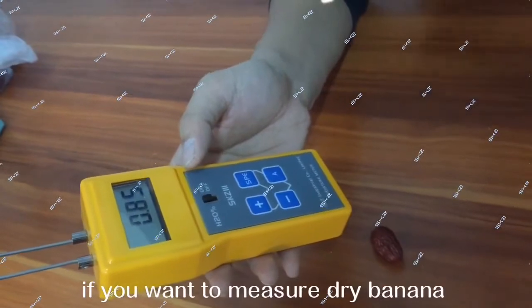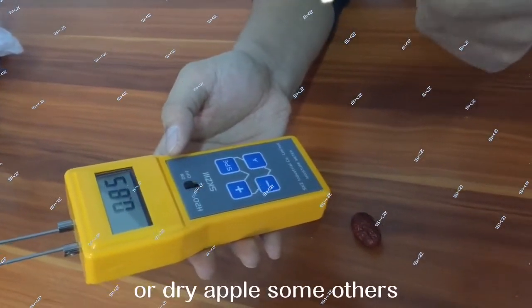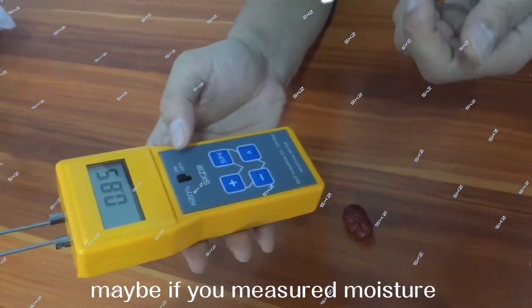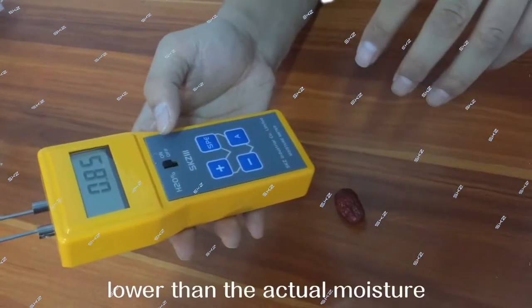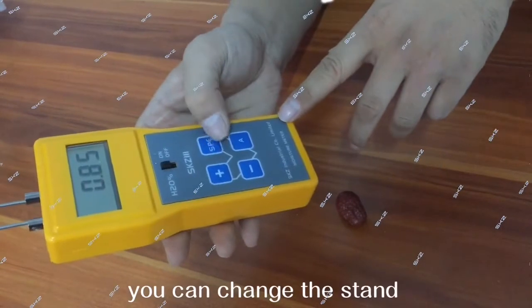So if you want to measure dry banana or dry apple, some others, maybe if you measure the moisture lower than the actual moisture, you can change the standard.